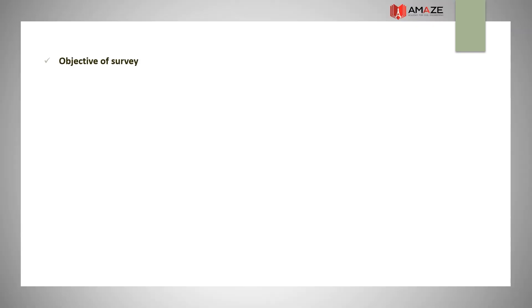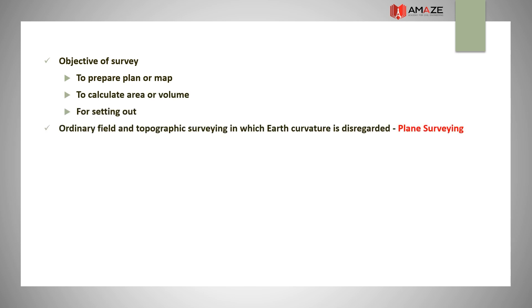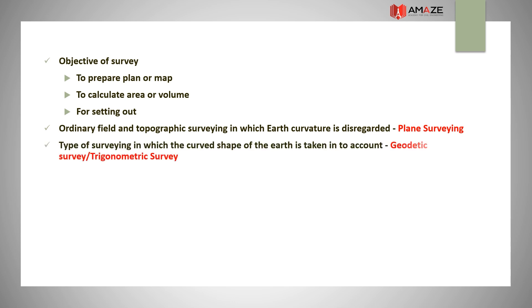The objective of surveying is to prepare a plan or map, to calculate area, volume, and for setting out. Ordinary field and topographic surveying in which the earth's curvature is disregarded is called plane surveying. The type of surveying in which the curved shape of the earth is taken into account is geodetic survey or trigonometric survey.